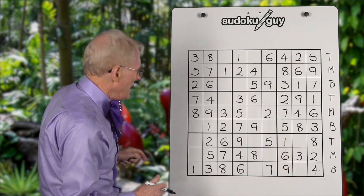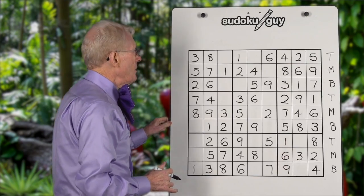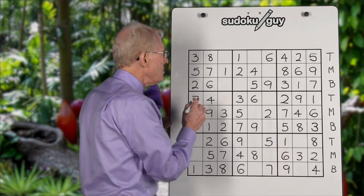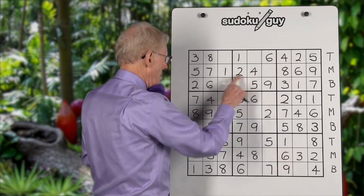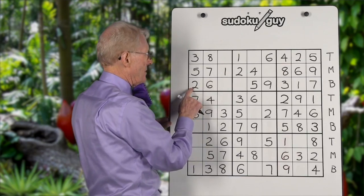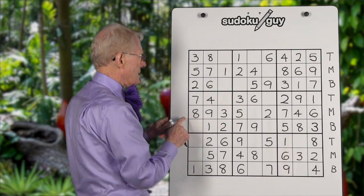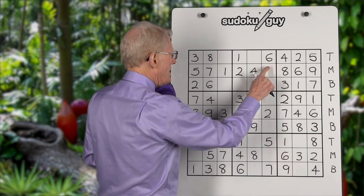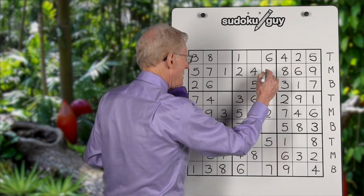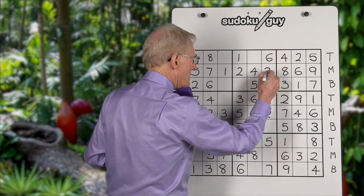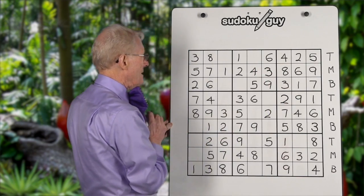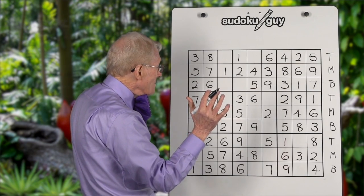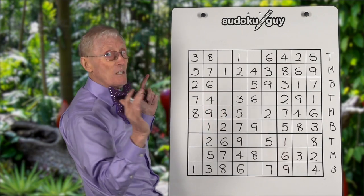Now let's continue on. We were at one, now let's go to two. Top, middle, bottom — they're all there. Threes: we have a top and a bottom, so this one has to be in the middle. Did I see that before? Maybe not — it's easy to miss them.